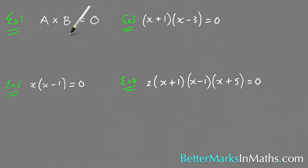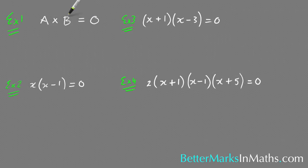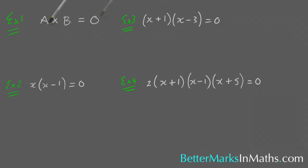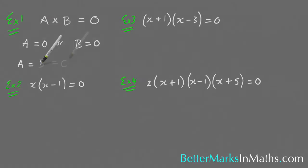In this lesson on how to use the null factor law in quadratics: the null factor law is that if a times b equals 0, then either a is equal to 0, or b is equal to 0, or they're both equal to 0. If a equals 0, you get 0 times b which equals 0. If b equals 0, you get a times 0 which equals 0. And if both equal 0, then 0 times 0 equals 0.